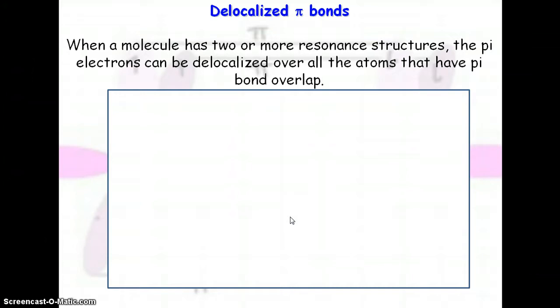In a resonant structure, the pi bonds become delocalized. We've been talking about how resonant structures—they're really not a double bond or single bond on one side, it's actually an average of the two. Well, the reason that it can average like that has to do with the pi bonding. The pi electrons become delocalized over all of the atoms in the structure that have a pi bond overlap.